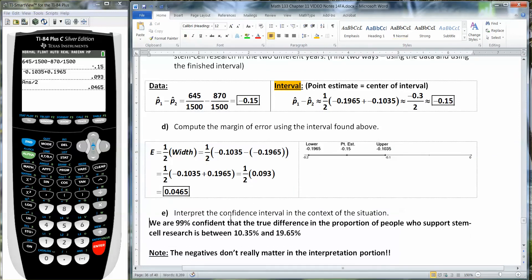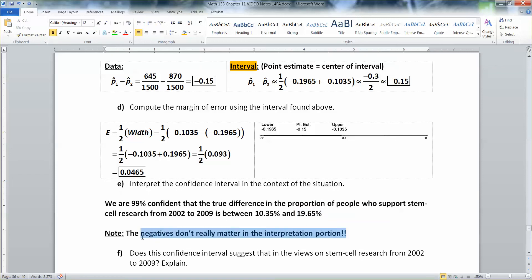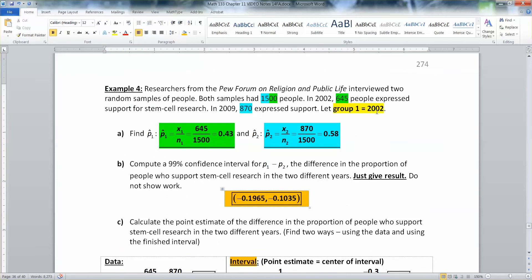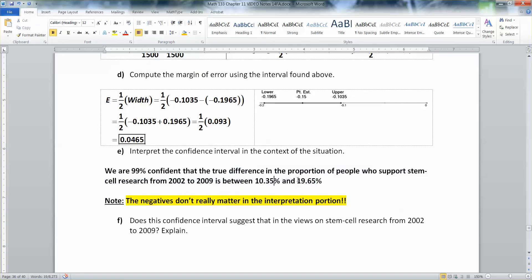So we are 99% confident that the true difference in the proportion of people who supported stem cell research from 2002 to 2009 is between 10.35% and 19.65%. Now, notice I turned both of them into percentages because it's kind of easier to imagine the interpretation portion that way. Furthermore, the negatives don't really matter. When you're interpreting, all you're trying to talk about is the differences. The reason they turn out to be negative is because I picked group 1 to be 2002. If I picked group 1 to be 2009, then the differences would have been positive.